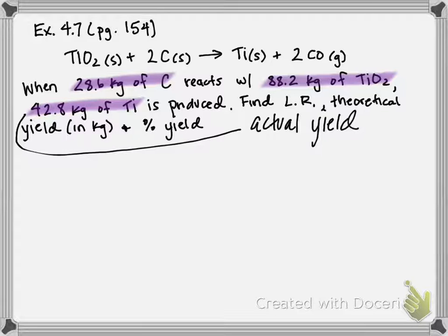We also have the balanced equation written up top. Starting with 28.6 kilograms of carbon, we'll determine how much titanium it can produce. To calculate the theoretical yield and find the limiting reactant, we start with a reactant material in grams or kilograms and convert to a product material. We'll calculate the mass of titanium it can produce, since the problem already references the actual yield of titanium.